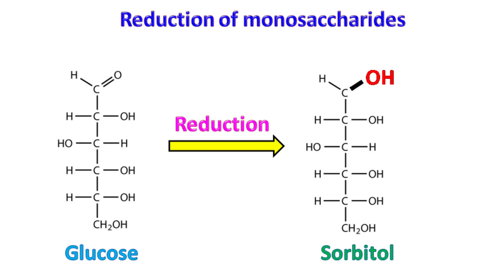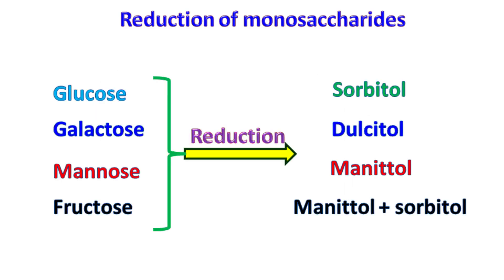Reduction. Reduction of the aldehyde or keto group results in the formation of an alcohol. Reduction of glucose gives sorbitol, galactose gives dulcitol, mannose gives mannitol, and fructose gives both mannitol and sorbitol.